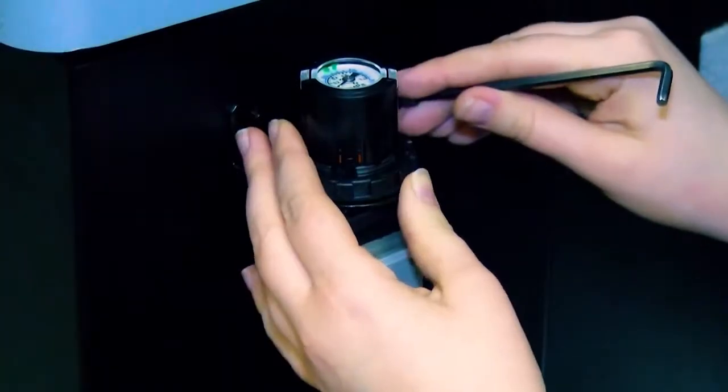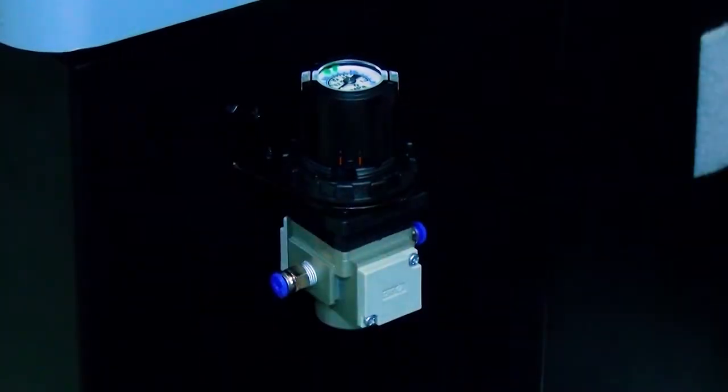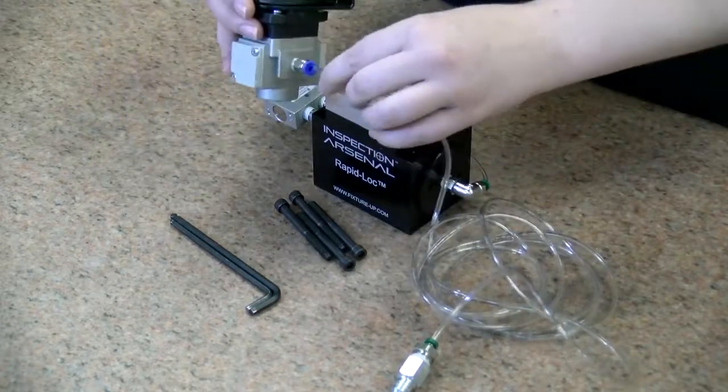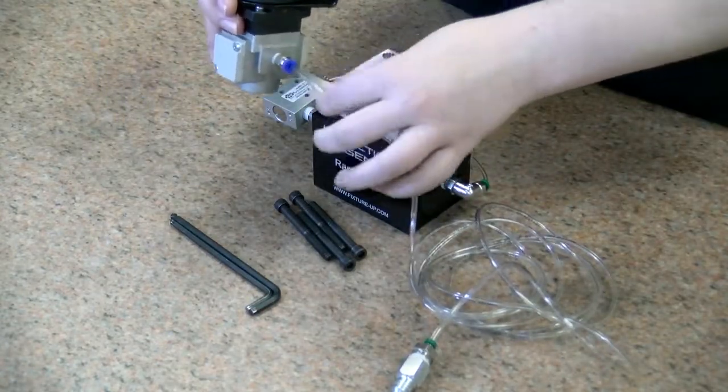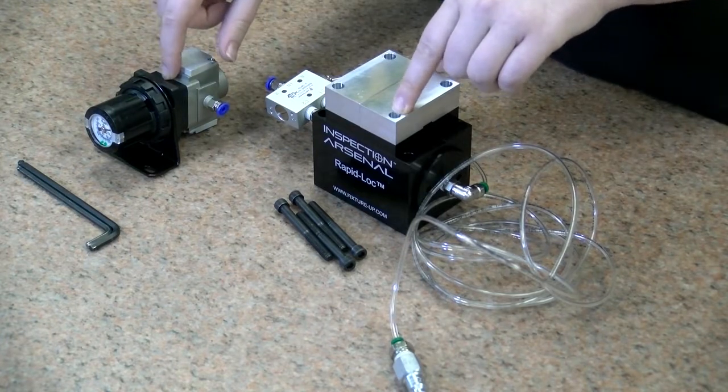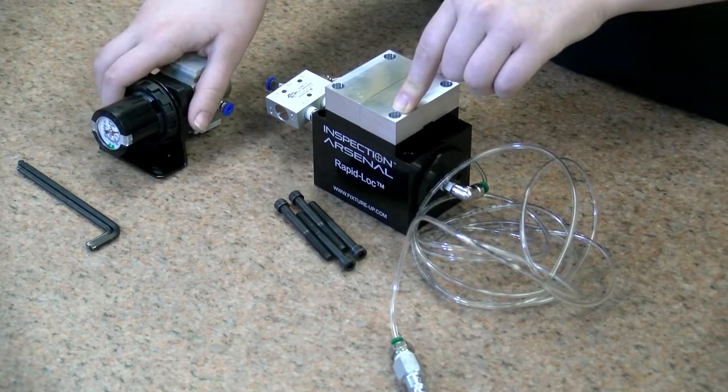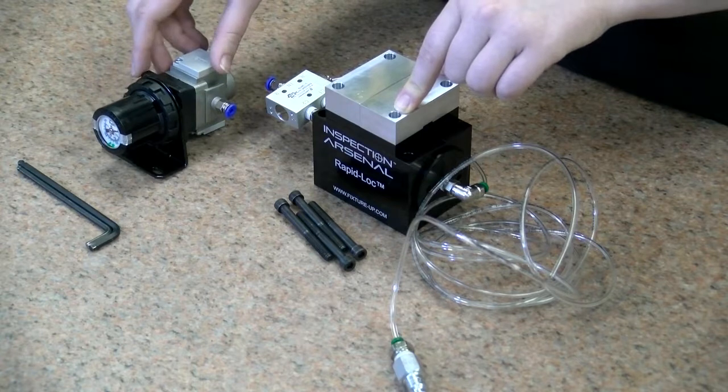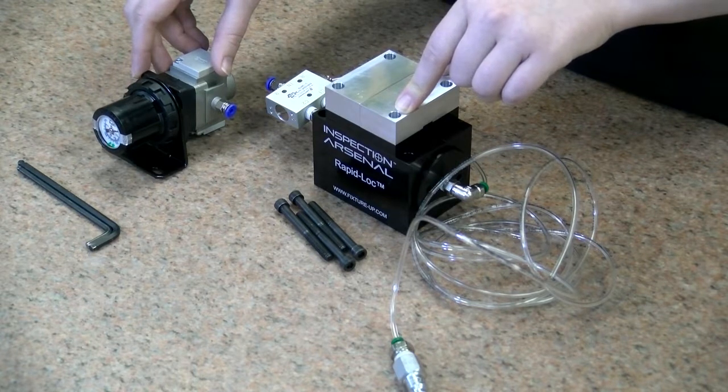Assembling the vise system, you will need to have a place to mount the regulator as well as mounting hardware. The first step is to determine the length of air tube needed to insert into the regulator. Find a suitable mounting location for the regulator and measure the rough distance from the regulator to where the vise will be. Keep in mind, if you are moving the plate with the vise mounted to it, this travel distance needs to be accounted for as well.